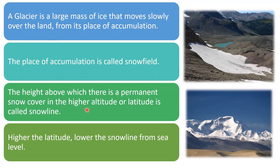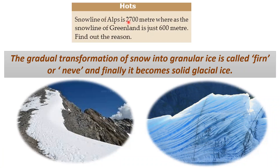Though the higher peaks of mountains are covered with snow, some parts are permanently covered with snow. The point from where we can see permanent snow cover is called the snow line. Above 66.5° north and 66.5° south, there will definitely be permanent snow cover. If a place is at a higher altitude or higher latitude, it will have a lower snow line. For example, the snow line of the Alps in the temperate zone is 2,700 meters, while the snow line of Greenland in the Arctic region is just 600 meters. The gradual transformation of snow into granular ice is called firn or névé, and finally it becomes solid glacial ice.